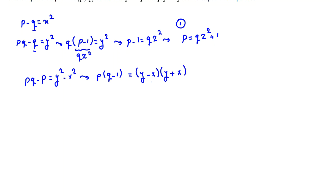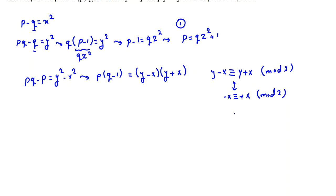Now, Y minus X and Y plus X both have the same parity — both even or both odd. The reason is Y minus X is congruent to Y plus X mod 2, because negative X is congruent to positive X mod 2. Adding X to both sides gives 2X mod 2, which is 0. So both are even or both are odd.